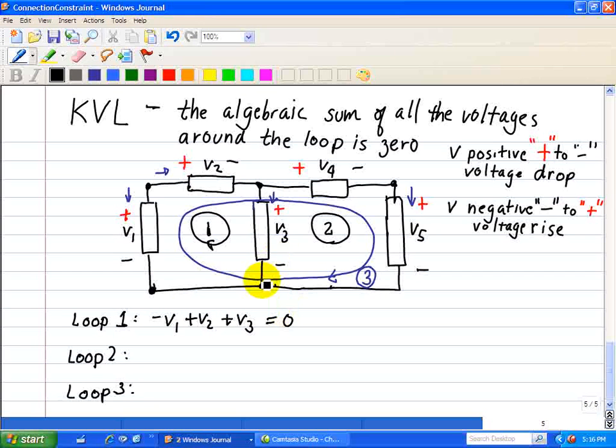For loop 2, we're going to start right here, and so we're going from negative to positive, so that's a negative V3, then we're entering a positive V4, and entering a positive V5, and that's equal to 0.